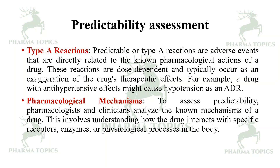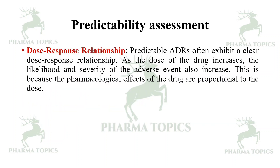To assess predictability, pharmacologists and clinicians analyze the known mechanism of the drug, involving understanding how the drug interacts with specific receptors, enzymes, or physiological processes in the body. Predictable adverse events often exhibit a clear dose-response relationship: as the dose increases, the likelihood and severity of the adverse event increases, because the pharmacological effects are proportional to the dose.